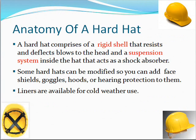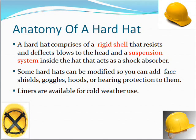Anatomy of a hard hat. A hard hat comprises a rigid shell that resists and deflects blows to the head, and a suspension system inside the hat that acts as a shock absorber. Some hard hats can be modified to add face shields, goggles, hoods, or hearing protection. Liners are also available for cold weather use. Do not remove the suspension in order to wear the hat over a parka hood, as doing so will completely destroy the protection the hat provides.